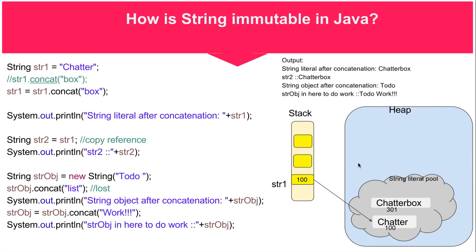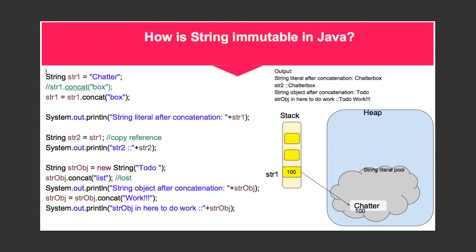A new string is created and the previous one remains the same, but you start pointing to a new string. For example, here in the first line of code, String str1 equals Chatter.